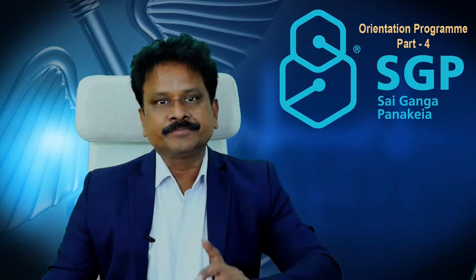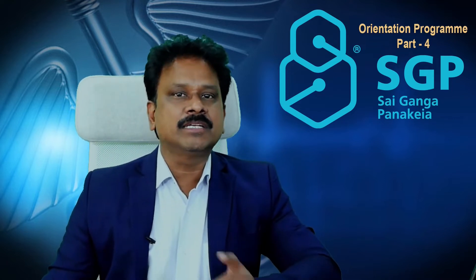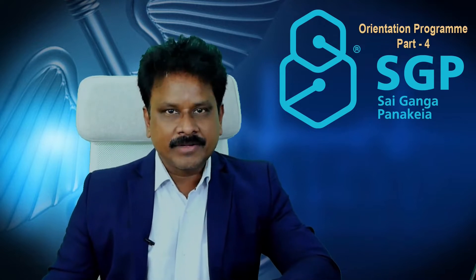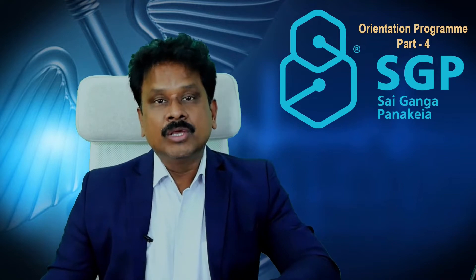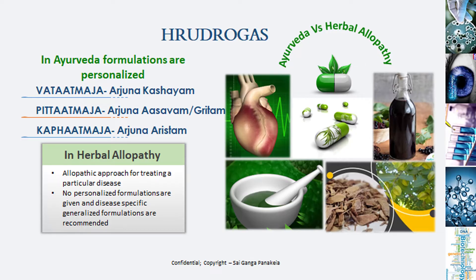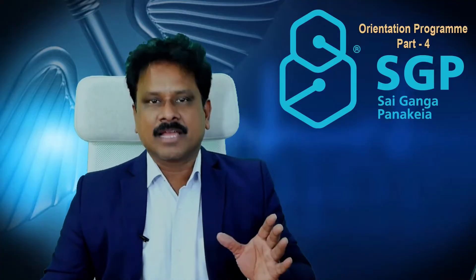If the vata component led to ischemic heart disease — a vatatma hrudaroga — then you give arjuna in the form of a kashayam, a water extraction. If pitta predominance led to the heart disease, you give arjuna in the form of ghritam, a fatty extraction, or asavam, a low-percentage ethanol extraction. If kapha is the primary cause, you give arishtam of arjuna, which is a 30 to 40 percent ethanol extraction. This is the syntax already given.